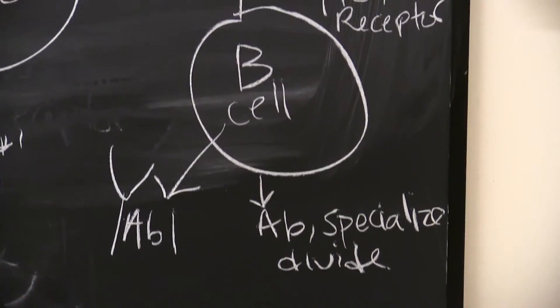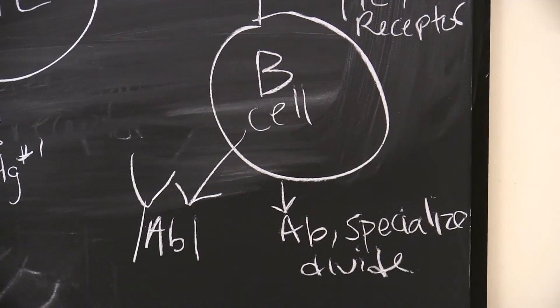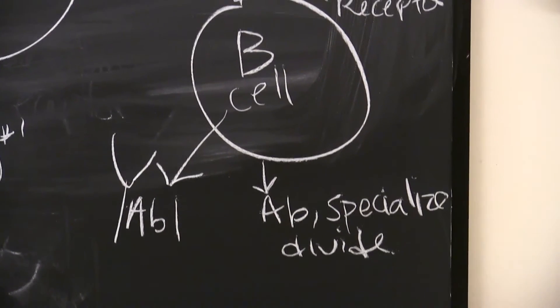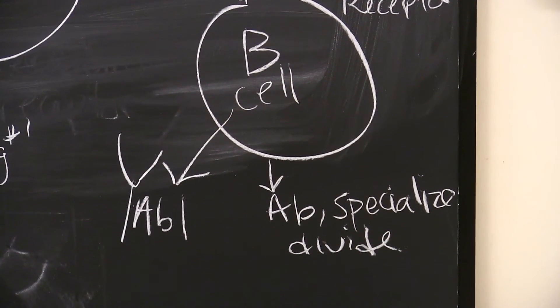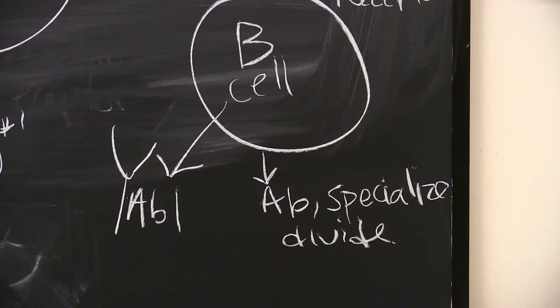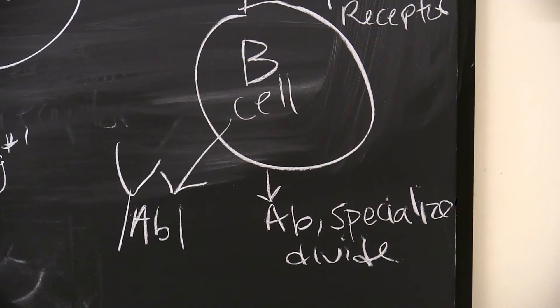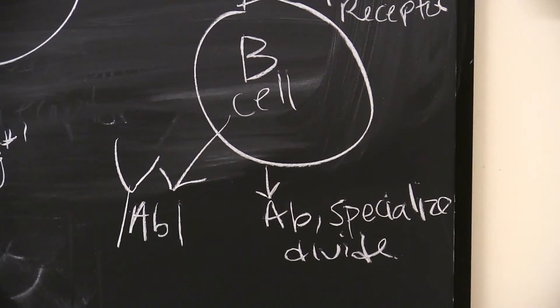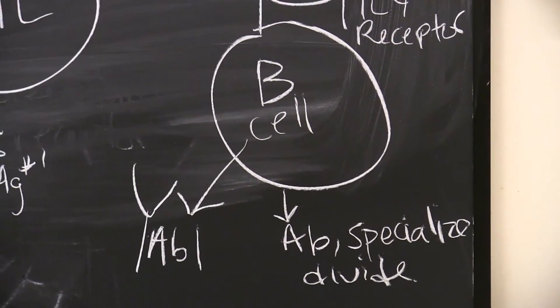And then what we have after that is the B-cell is going to make our antibody number one, which is specific for antigen number one. Remember, this antibody cannot bind to just any antigen, but it's the same antigen that started this whole process. These cytokines also tell the B-cell to specialize, so they specialize into our plasma cells, which are the antibody factories, and also memory B-cells.